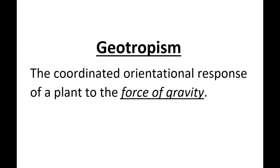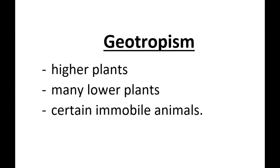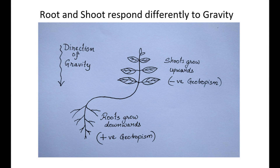Geotropism may be defined as the coordinated orientational response of a plant to the force of gravity. Geotropism is exhibited by all higher plants and many lower plants including certain immobile animals. Plant roots are usually positively geotropic and move towards the stimulus of gravity, while shoots are negatively geotropic and move away from gravity.